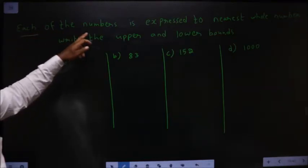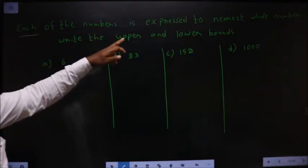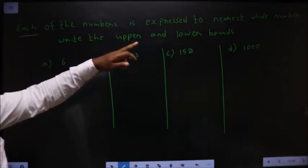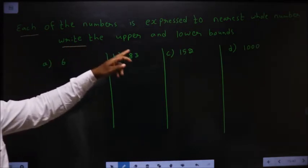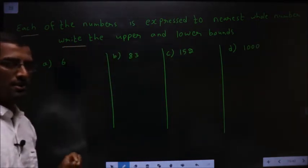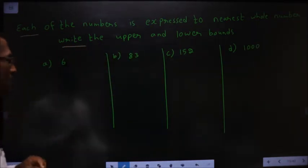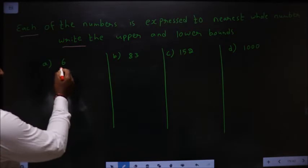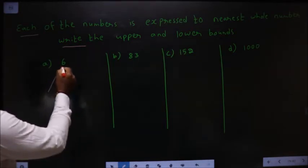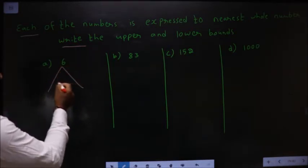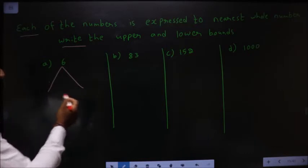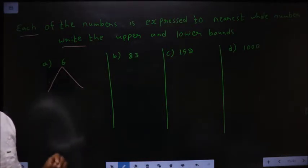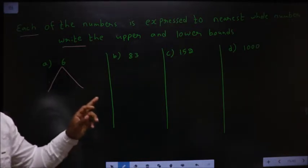Each of the numbers is expressed to the nearest whole number. Write the upper and lower bounds. For this number 6, what should I subtract and add to get the lower and upper bound? How do you decide that, based on this one?